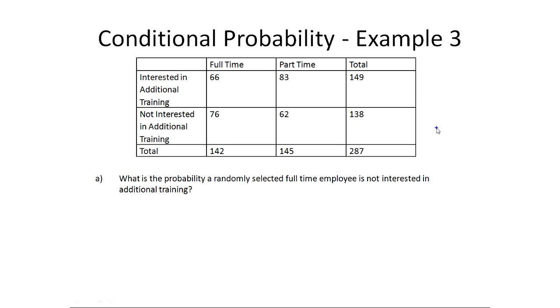Hello, this is Jeremy, and in this example I'm going to go through how to find conditional probabilities, specifically when you already have data set up for you. In other words, you have some kind of survey data or something like this. So in this particular example, we're given data on a survey of employees at a company and whether they're interested in additional training on our online system or not.